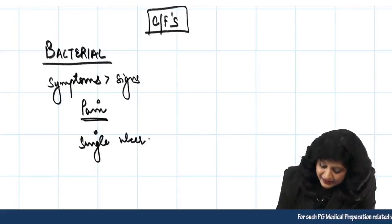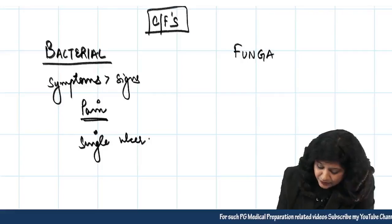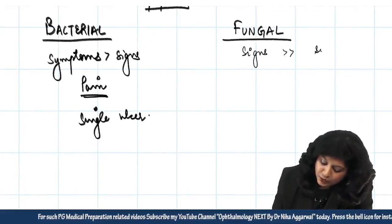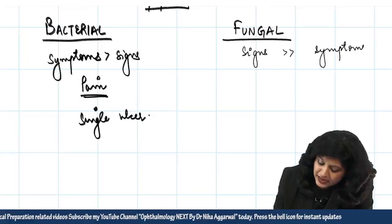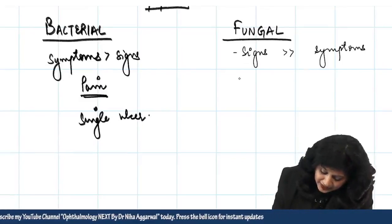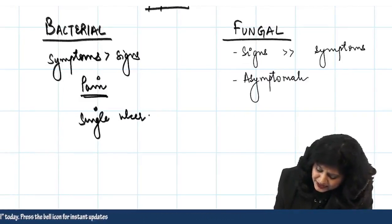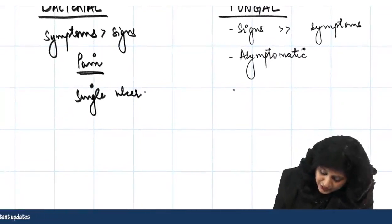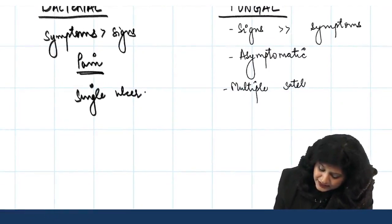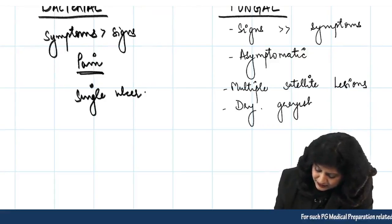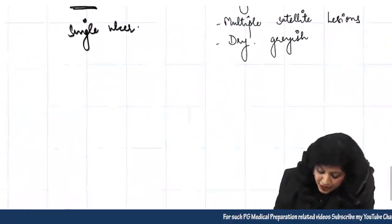In fungal keratitis, it is the opposite — signs are much more than the symptoms. It is a kind of ulcer that is relatively asymptomatic. You will see multiple satellite lesions, and it is a dry, grayish-looking ulcer.